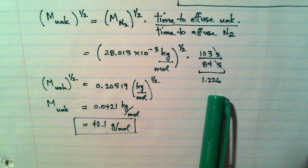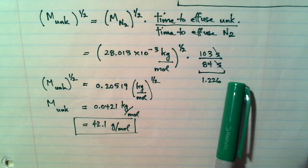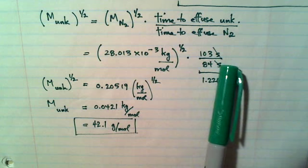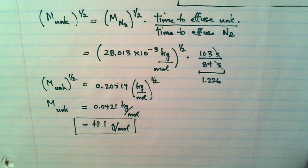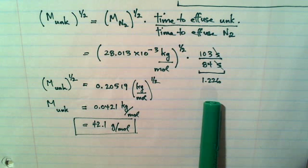Does it matter what I choose for the units for the time to effuse? Well, no, it could have been hours, both hours, both minutes, or both seconds, but not stopwatch time. So we converted both of them to seconds because they're going to cancel anyway and produce the same ratio. So that ratio was 1.226.